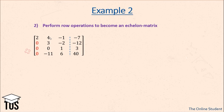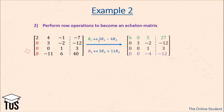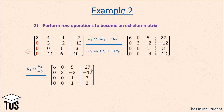Now let's get zeros in the second column. We perform these row operations: the first row becomes 3 times the first row minus 4 times the second row, and the fourth row becomes 3 times the fourth row plus 11 times the second row. We now have zeros above and below the leading elements in the first and second columns. The fourth row is also divisible by minus 4, so we divide it.